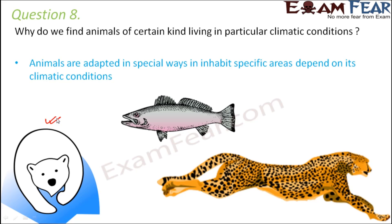It is not only polar bears — fish, for example, have gills to absorb oxygen from water, a streamlined body, and fins and tails to swim. They need water and cannot survive on land. Every organism is equipped to survive in a particular type of climatic condition, and wherever they find that climate, that is where they live.